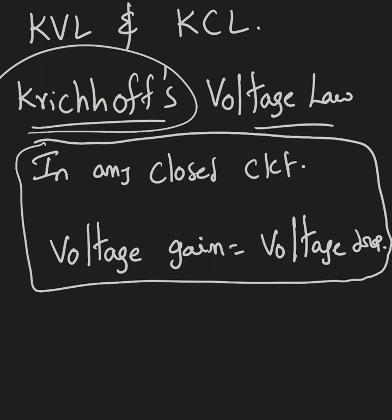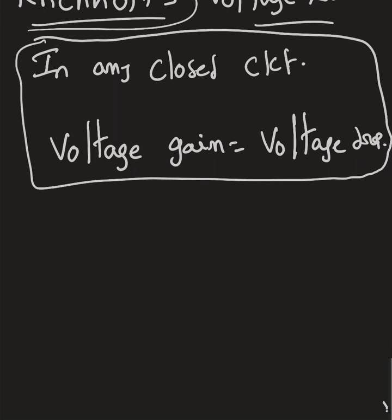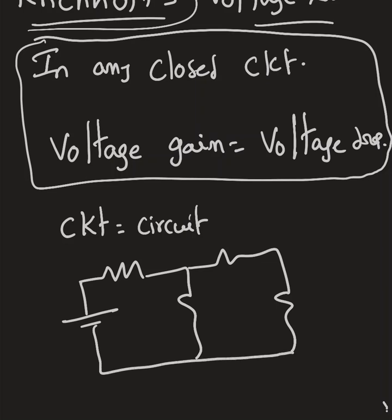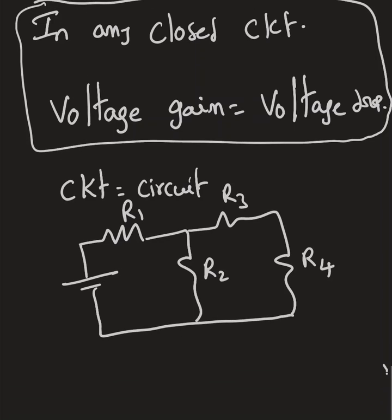So how do we know which one is voltage gain and which one is voltage drop? Here is a circuit — CKT is similar to circuit. Also, there is another way of solving a circuit by using KVL, called Mesh or Loop. Here is a circuit with one source and four resistors.